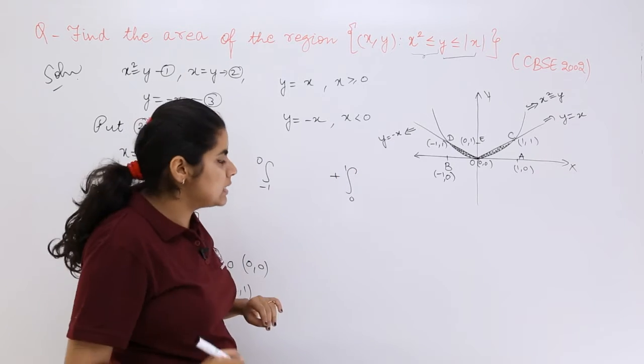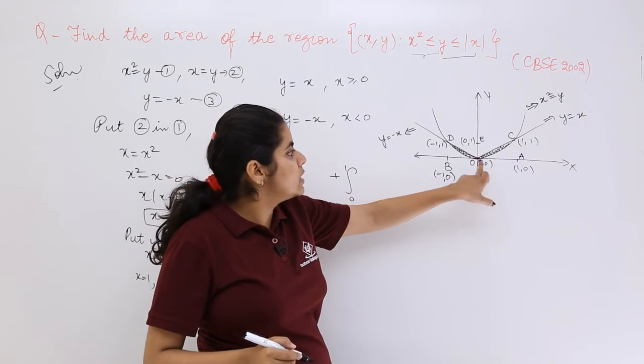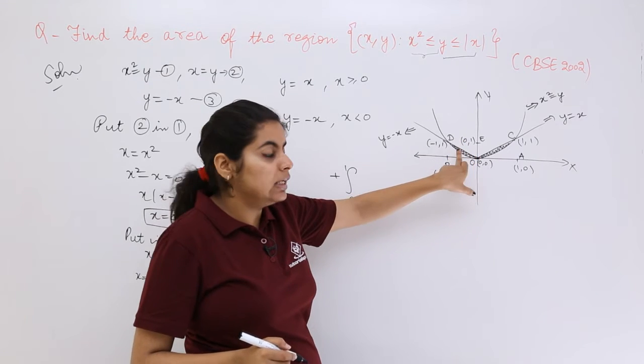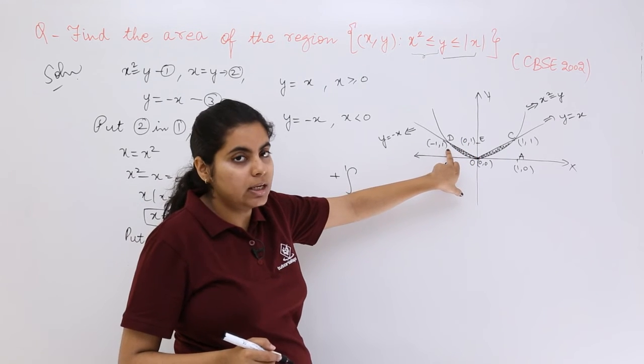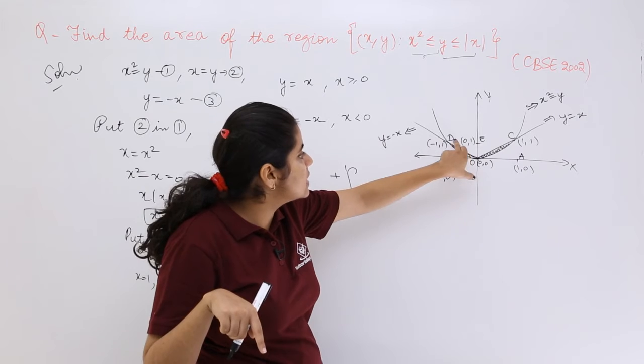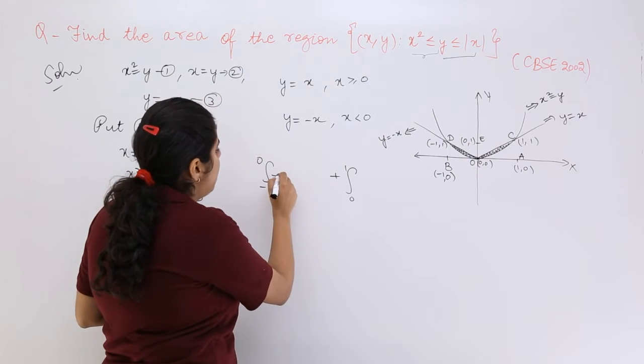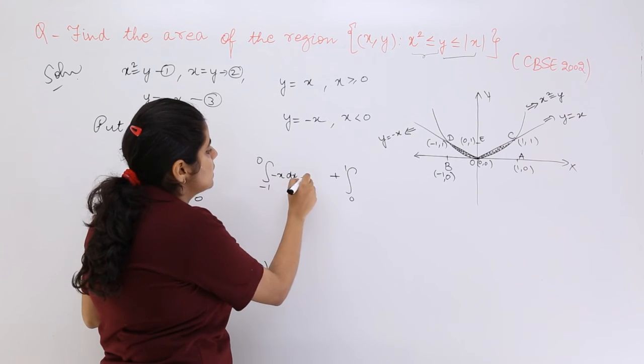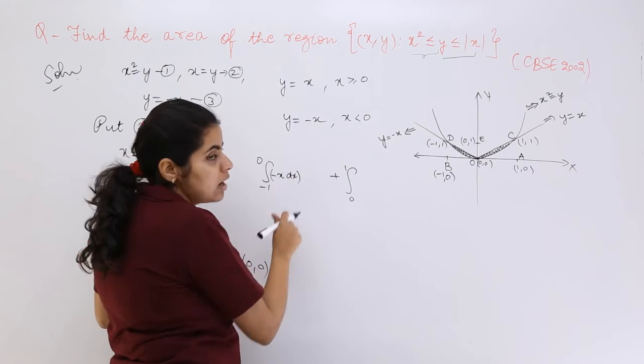The first thing, the second thing. -1 to 0, upper curve is this line, lower is this parabolic curve. So it's the line's equation. So it is -x dx.